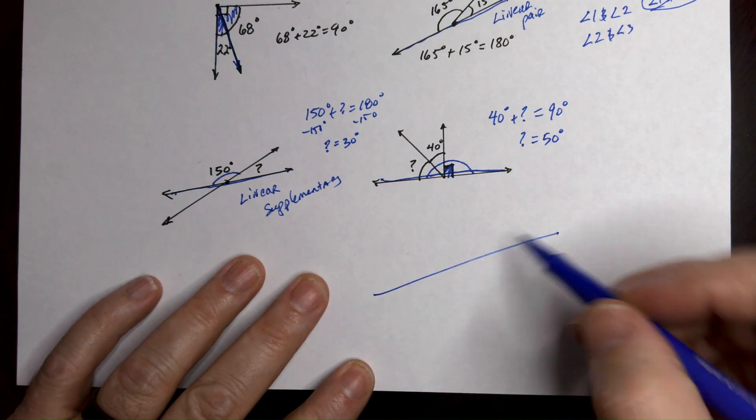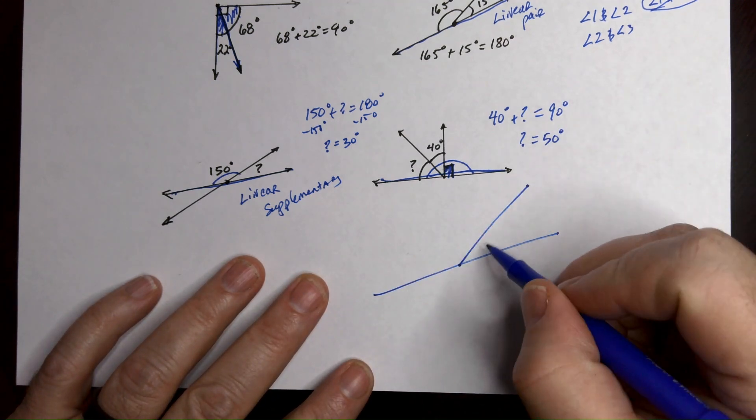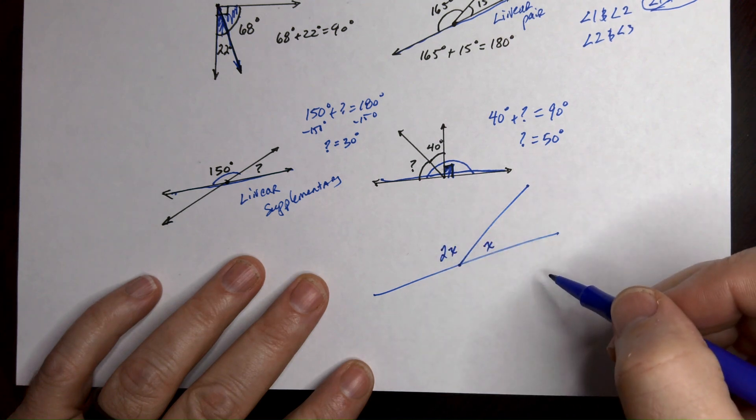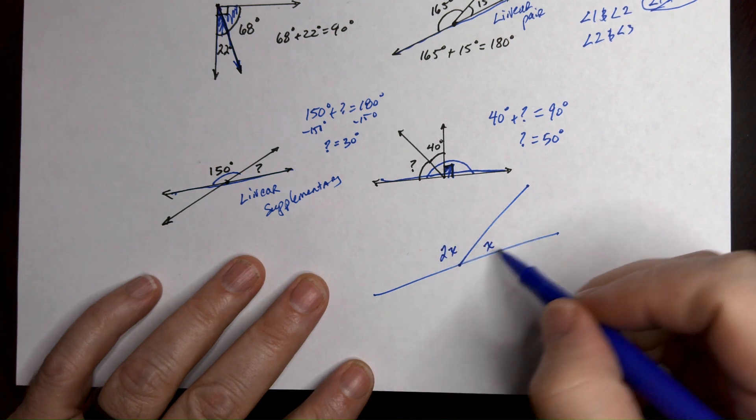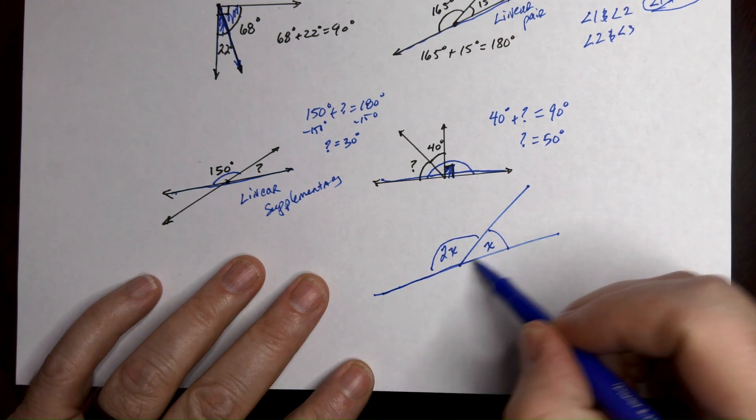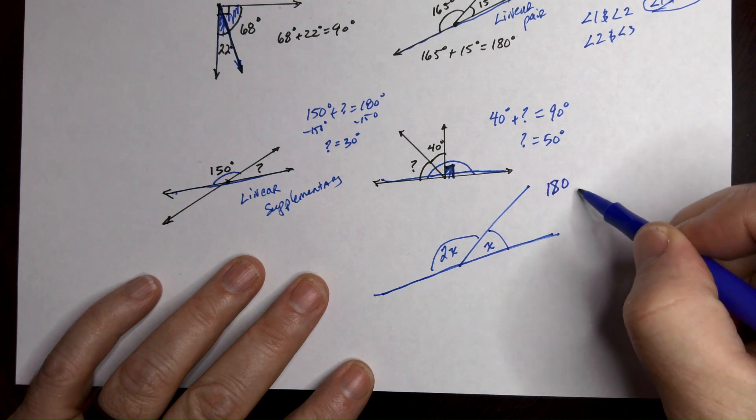Now sometimes you might have one that looks like this. You see? So let's say this was x and this was 2x and you had to figure out what x was. Well you can see these two angles right here, this one and this one, they're adjacent and they make a straight line. So they're a linear pair and they're supplementary which means they add up to 180.